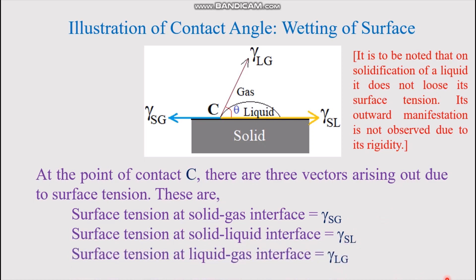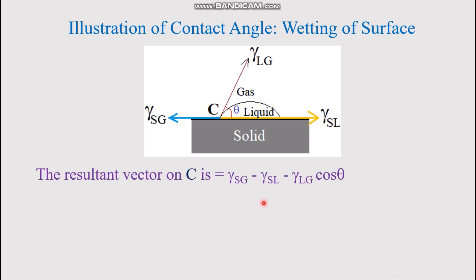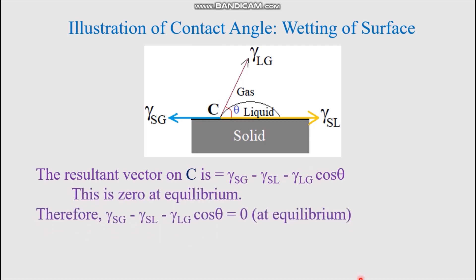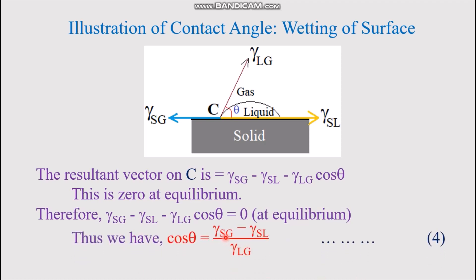At the contact point C, the three surface tension vectors are γ_SG (solid-gas), γ_SL (solid-liquid), and γ_LG (liquid-gas). The resultant at equilibrium gives: γ_SG − γ_SL − γ_LG·cosθ = 0, and the final result is cosθ = (γ_SG − γ_SL) / γ_LG. This is equation number 4, carried forward from the previous lecture.